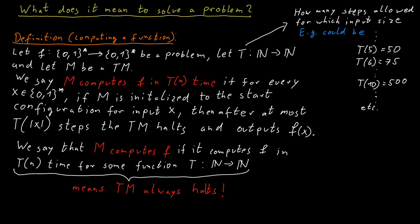Even if it produces the correct output for all other inputs, if there is a single input for which the machine does not halt, then that machine doesn't compute anything.